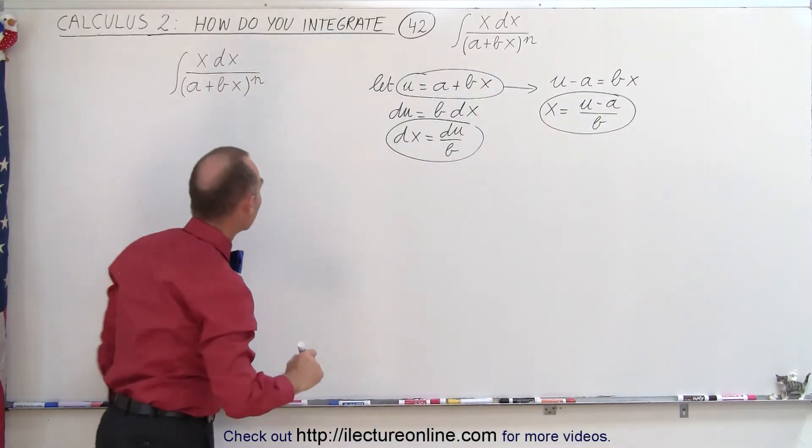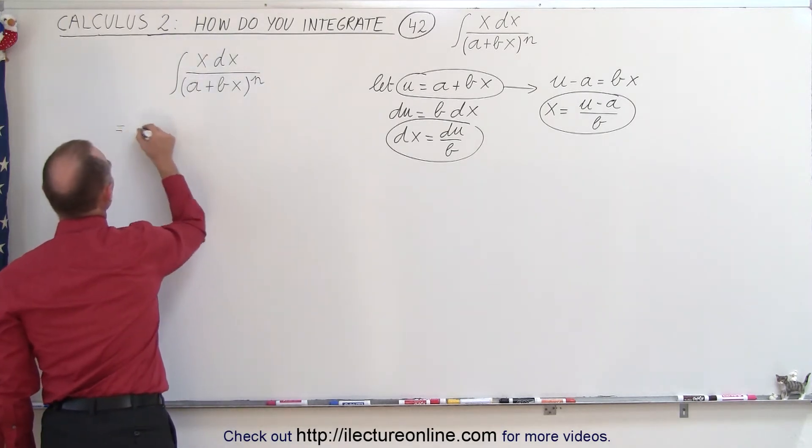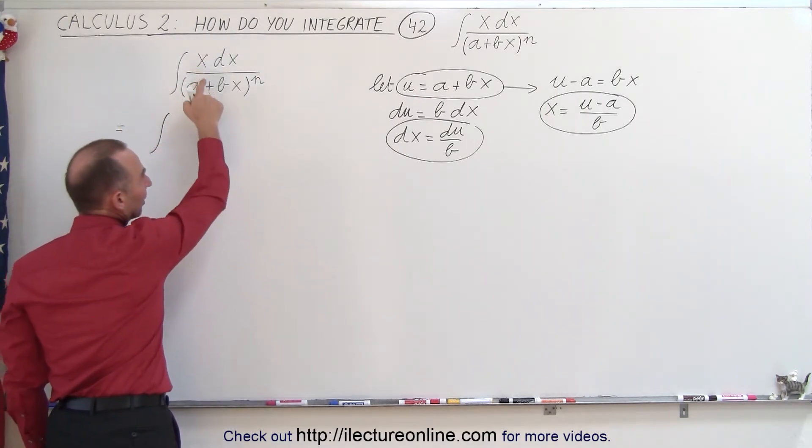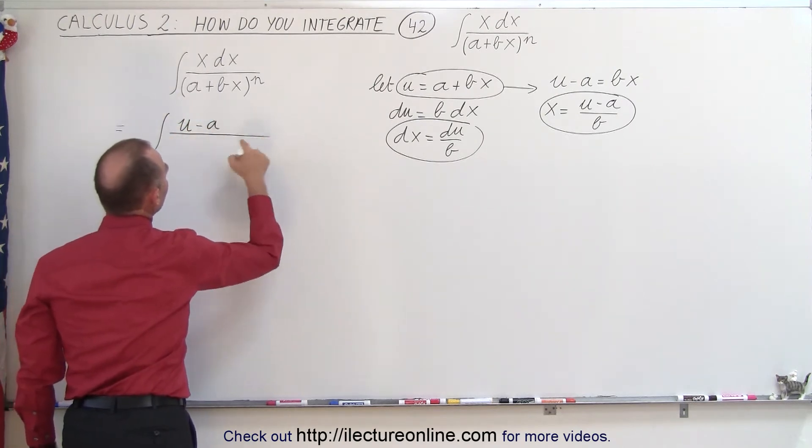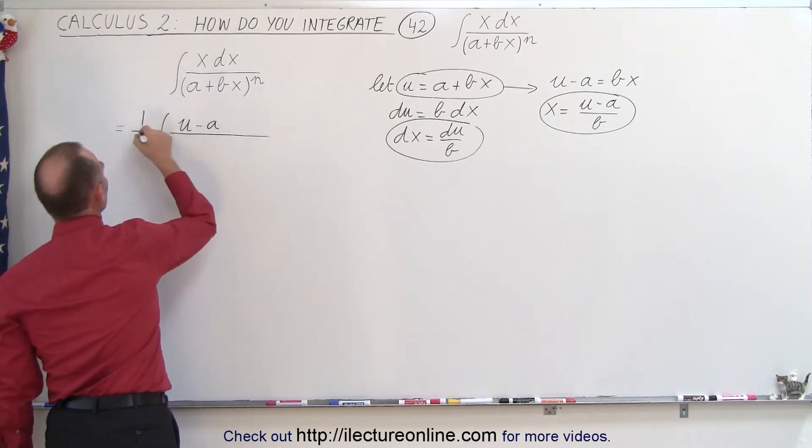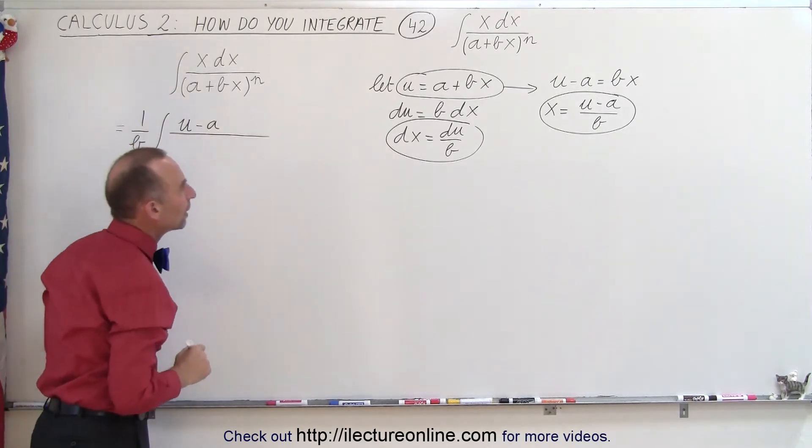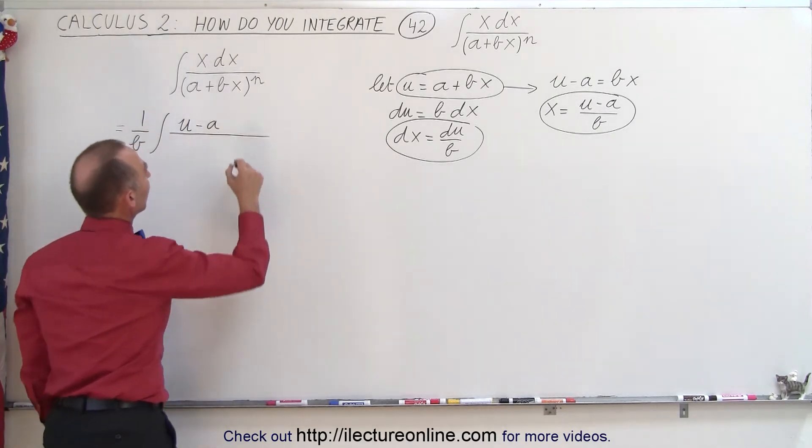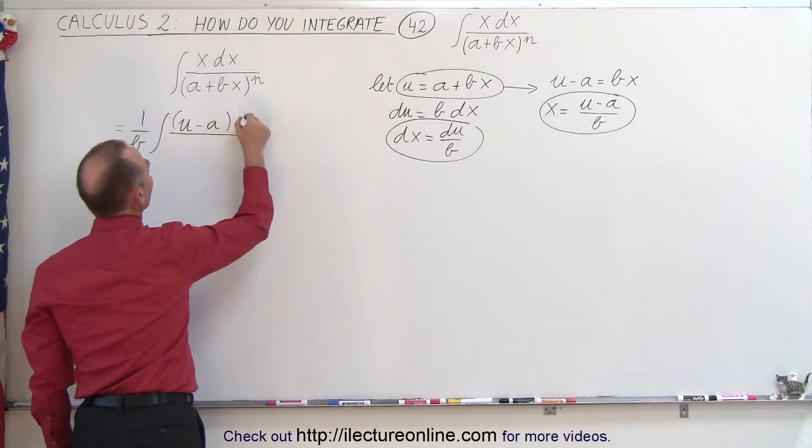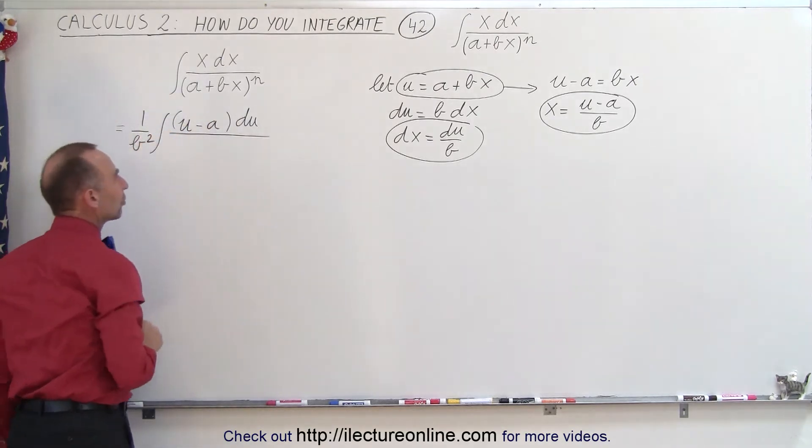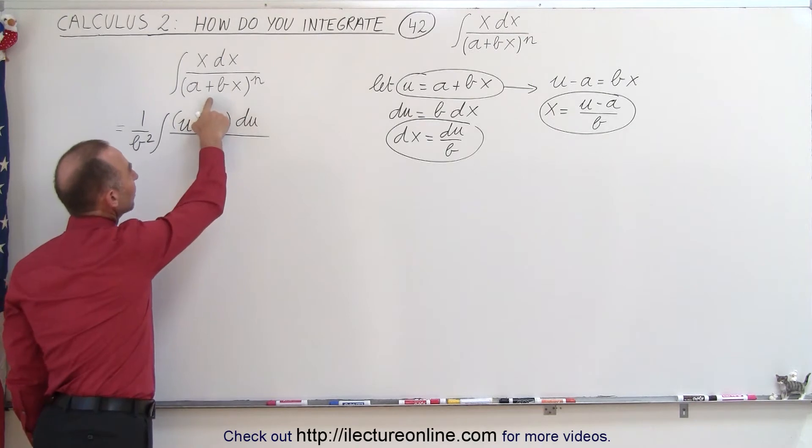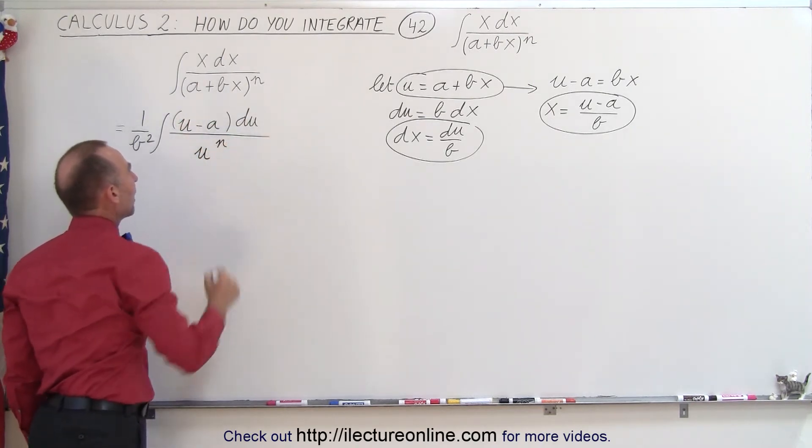Let's see what it looks like now. So this becomes equal to the integral of x. Now x is u minus a divided by b, but let's take b outside the integral sign. This becomes 1 over b. And then dx becomes du divided by b. And again, let's take the b outside the integral sign. It becomes b squared. And in the denominator, we have a plus bx, which is u raised to the n power.